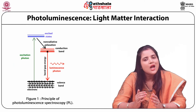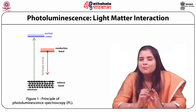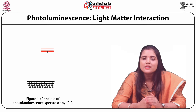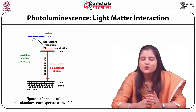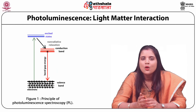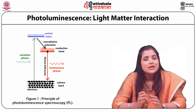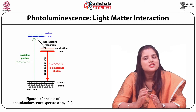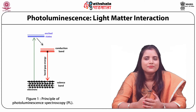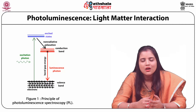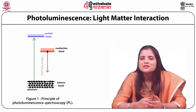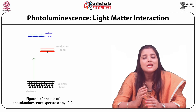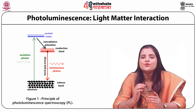When light strikes a sample, it gets absorbed by imparting its excess energy to the material by the phenomena known as photoexcitation. One method in which the sample dissipates this excess energy is through light emission, that is luminescence. In case of photoexcitation, luminescence is known as Photoluminescence. Excitation causes the material's electrons to occupy the allowed excited states.